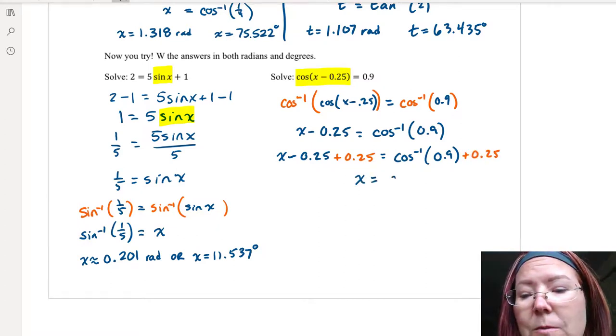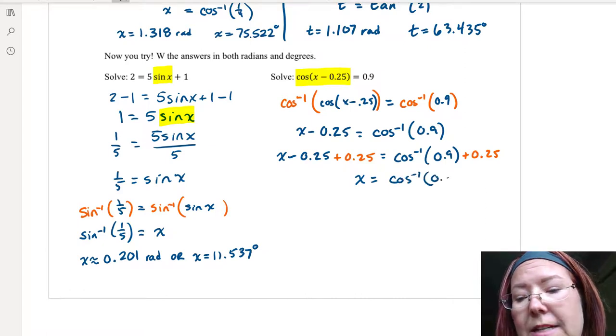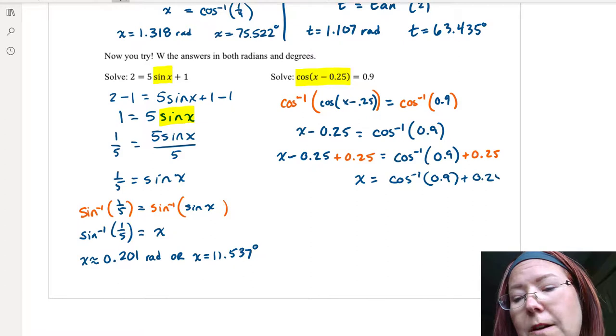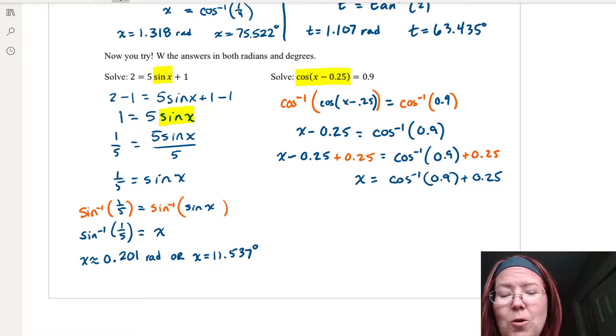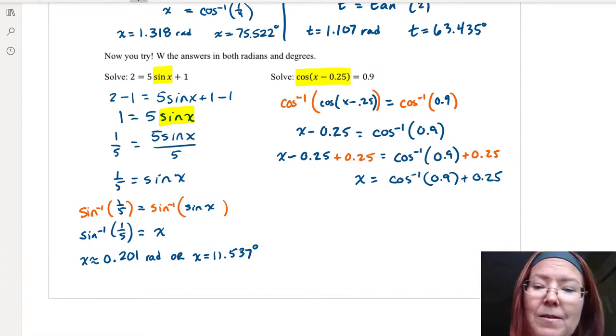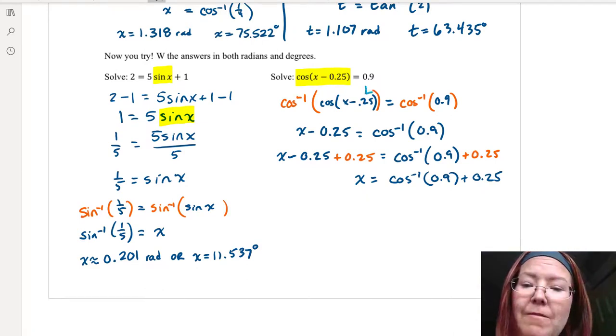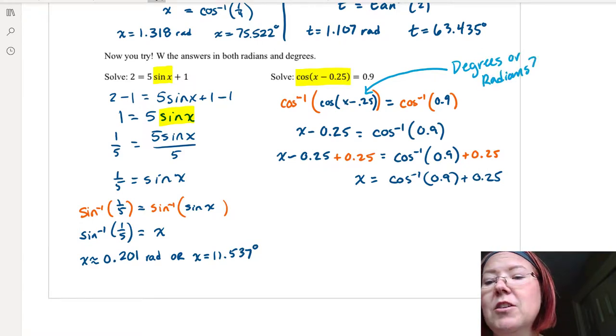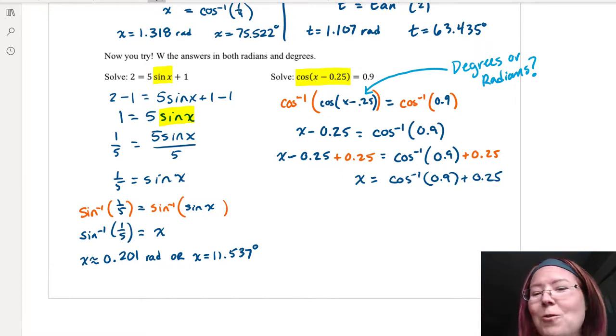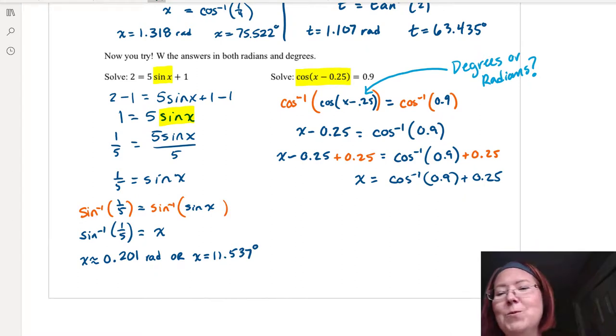Now I am going to work this out in both degrees and radians, but I will tell you that only one of these can possibly be right. And which one is correct really depends on whether this 0.25 is written in degrees or radians. And that would depend on the context of the problem. If 0.25 was written in degrees, then our answer would come out in degrees. If 0.25 was written in radians, then our answer would come out in radians.